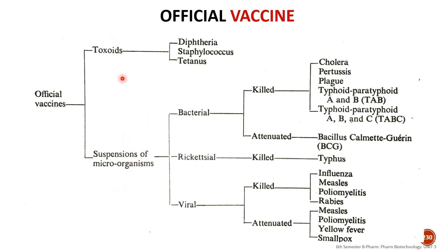Toxoid is produced from toxin-producing microorganisms. The toxins are separated and their toxicity is removed while antigenicity is retained. Examples of toxoids are diphtheria toxoid, staphylococcus toxoid, and tetanus toxoid.